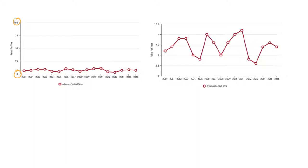It is the same information - for example, in 2000 it looks like they had about six wins, and in the new graph that's also about six wins. Every point represents the same data; the data hasn't changed, but the look of it has - and why? Because the scale has changed.